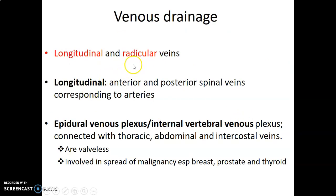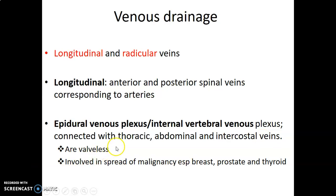The venous drainage of the spinal cord consists of radicular veins and longitudinal veins. The longitudinal veins are the anterior and posterior spinal veins corresponding to the anterior and posterior spinal arteries. We also have the epidural venous plexus — epidural veins outside the dura, also called internal vertebral plexuses. These are connected to thoracic, abdominal, and intercostal veins and are valveless, meaning blood flow is not unidirectional. This predisposes to spread of malignancy — prostate cancer, thyroid cancer, or breast cancer can spread to the spinal cord because these epidural venous plexuses communicate with thoracic and abdominal veins, and being valveless, they can carry metastasis into the spinal cord.